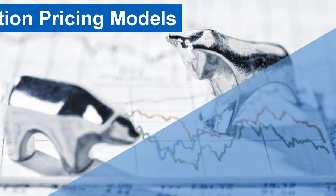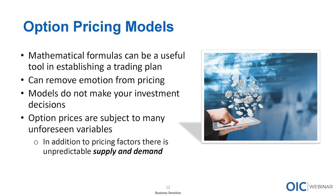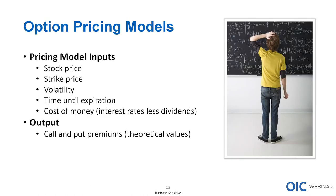When it comes to pricing, many investors use some form of pricing model — a mathematical formula that can be a useful tool in establishing the price of your option and your trading plan. It's important to keep in mind that models don't make decisions for you and are subject to many unforeseen variables. In addition to the standard inputs, there is that unpredictable factor of supply and demand. With some stocks going parabolic recently, pricing models have gone out the window because it's completely being driven by demand.